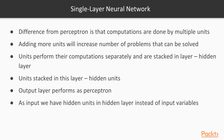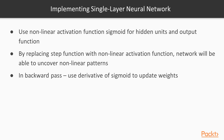For now, we will only consider a single hidden layer. The output layer performs as a perceptron, but this time its input comes from the hidden units rather than the input variables. In the next video, we will use a non-linear sigmoid activation function for the hidden units and the output. By replacing the step function with a non-linear activation function, the network will be able to uncover non-linear patterns as well. In the backward pass, we use the derivative of the sigmoid to update the weights.